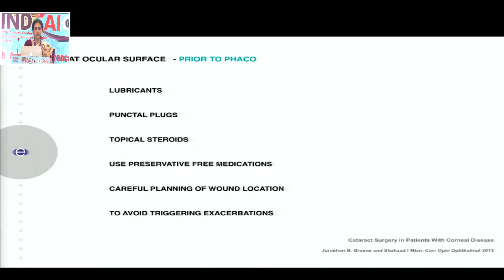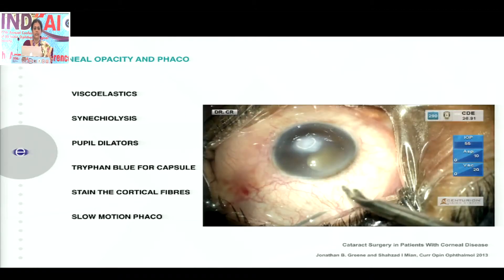Then comes the important question of where you plan your wound. You need to look at those areas of corneal thinning which could be there in the periphery, the area of scarring, and place your incision most optimally. Essentially, all of this is just to avoid triggering an exacerbation of the corneal disease.